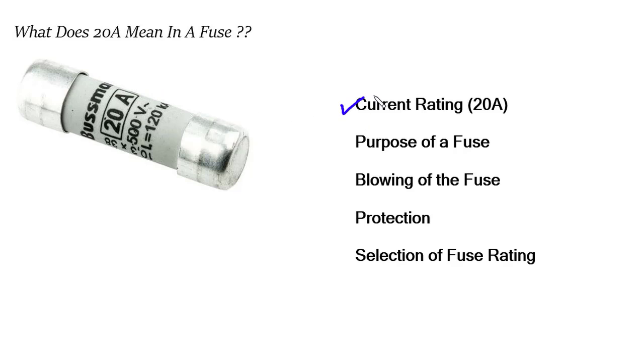Current rating 20A. The 20A indicates the current rating of the fuse. Current is the flow of electric charge measured in amperes. So 20A means the fuse is designed to allow a maximum current flow of 20 amperes through it.